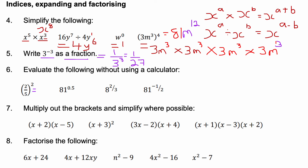Question six: evaluate the following without using a calculator. Two fifths all squared: it's 2 squared over 5 squared, which is 4 over 25.